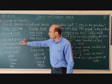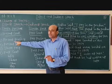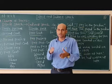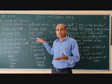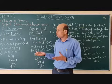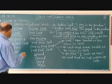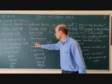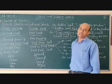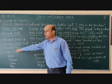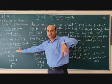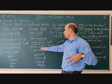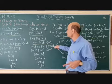Now, if the direct speech sentence is in present perfect tense, the indirect will be past perfect tense. Present perfect uses 'has' or 'have', and in past perfect it becomes 'had'. Next, if the direct sentence is in present perfect continuous tense, so the indirect speech tense will be past perfect continuous tense. And simple past tense in direct becomes past or past perfect in indirect.